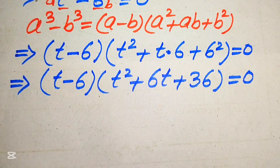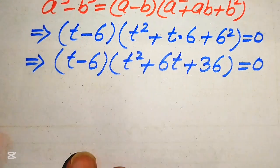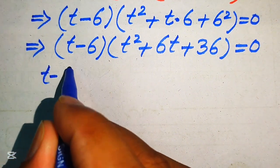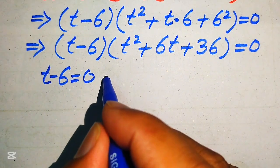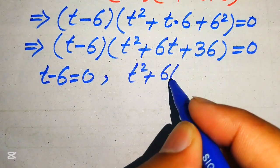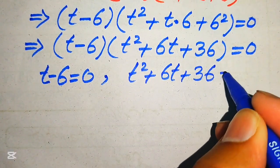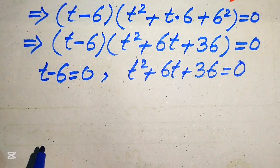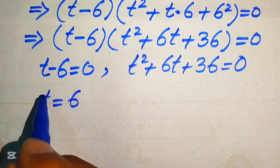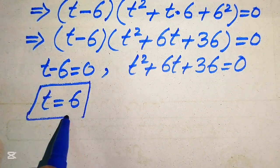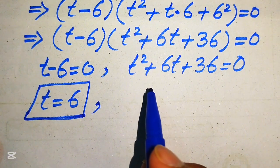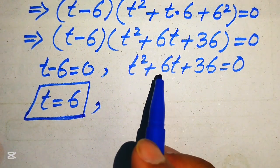Now we divide this equation into two cases. The first case is t minus 6 equals 0, and the second case is t squared plus 6t plus 36 equals 0. From the first case we easily get t equals 6, which is our first real root. Now we need to solve the quadratic equation from the second case.